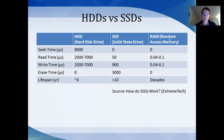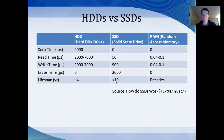Random access memory is volatile memory, meaning the information will be lost when the power is cut off, but it is extremely fast — in the nanoseconds, and erase time is zero. Also, something interesting to note: a hard disk drive will last about four years, while a solid-state drive will last over 10 years.